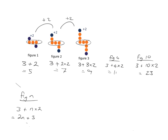Seeing 3 plus 2 dots, here 3 plus 2 lots of 2 dots, 3 plus 3 lots of 2 dots — this form is the useful form for seeing the pattern. We can get the number easily afterwards. But now we've got the pattern, we know that for any figure we can figure it out by saying figure n has 2n plus 3 dots. So if we want to know how many dots in figure 21, we say that will be equal to 2 times 21 plus 3. 2 times 21 is 42, and 42 plus 3 is 45.